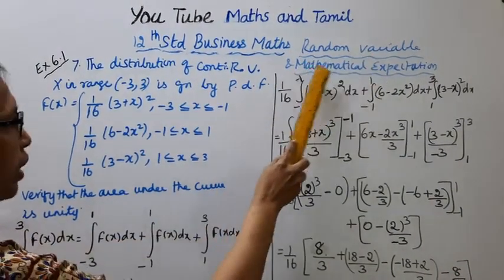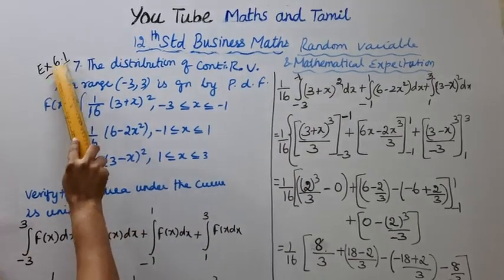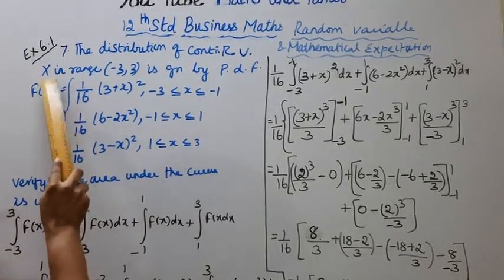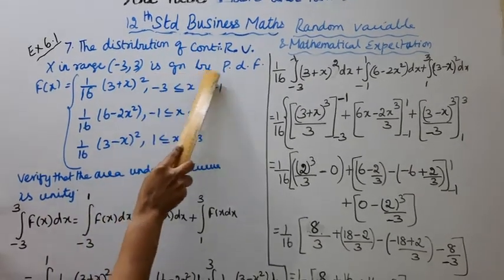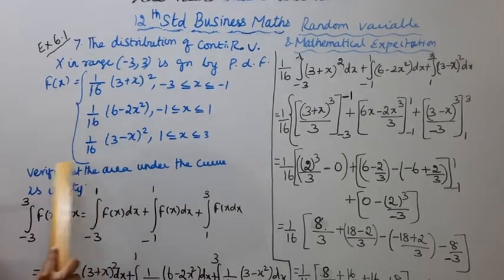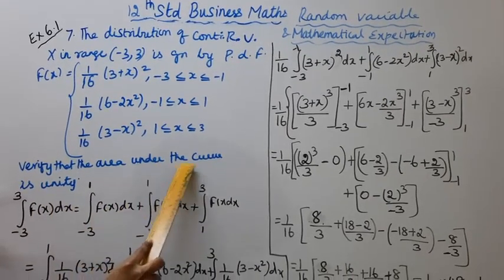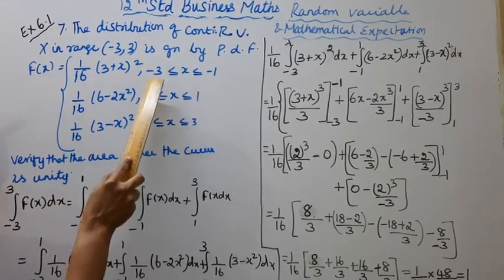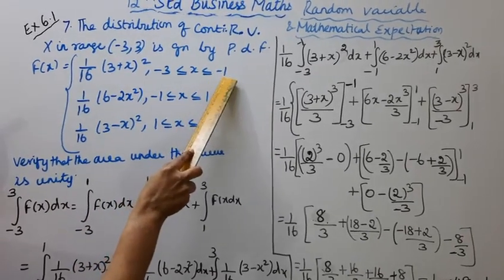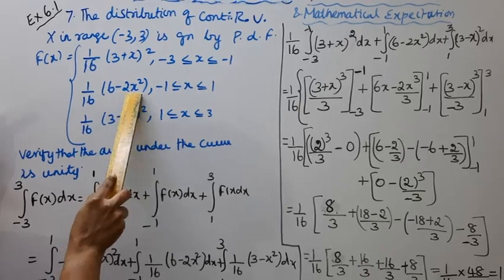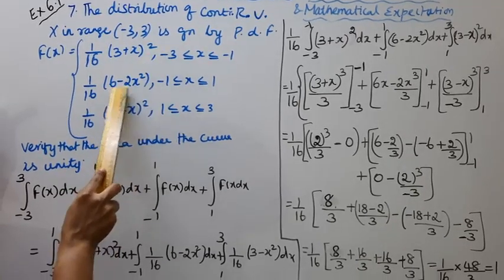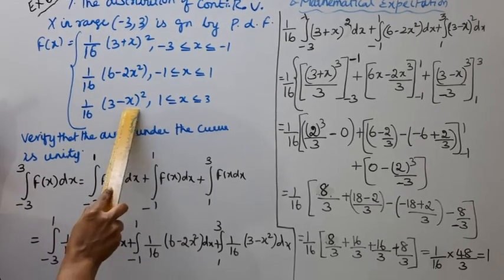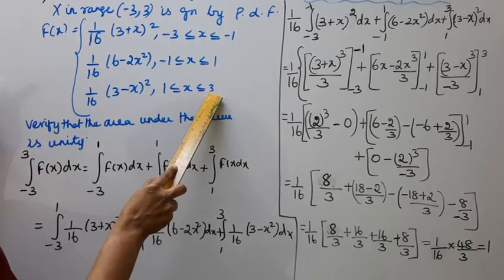Exercise 6.17: The distribution of a continuous random variable X in the range minus 3 to 3 is given by the probability distribution function f(x). The piecewise definition is: f(x) = (1/16)(3 + x)² for -3 ≤ x ≤ -1; f(x) = (1/16)(6 - 2x)² for -1 ≤ x ≤ 1; f(x) = (1/16)(3 - x)² for 1 ≤ x ≤ 3.